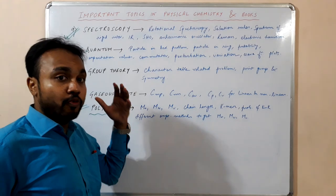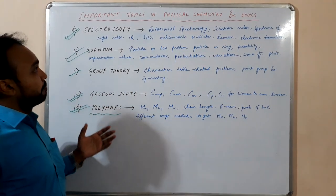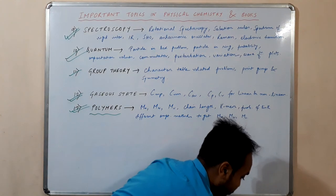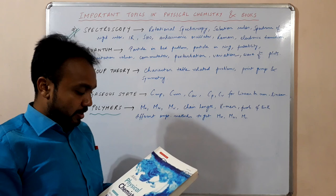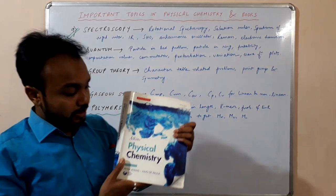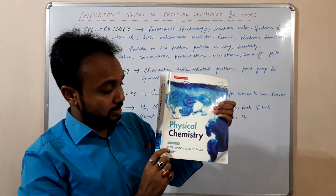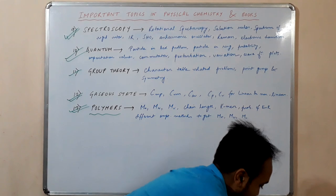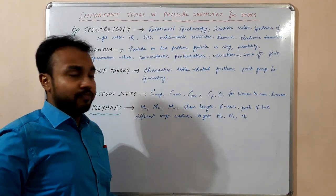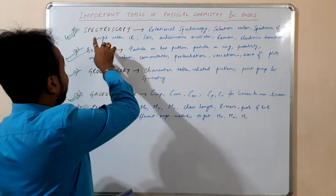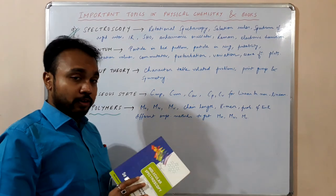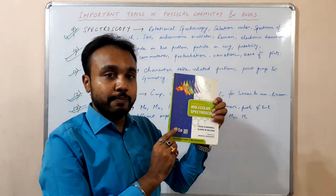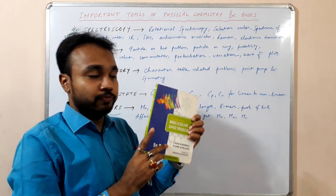These are the topics you need to focus on mainly for the CSIR NET exam. Now I will tell you some important books you should follow. First, I will suggest Physical Chemistry by Peter Atkins — you can find a PDF online. This is a very good book and you should follow it. For spectroscopy, I strictly suggest Fundamentals of Molecular Spectroscopy by Banwell. This is a very good and must-follow book.